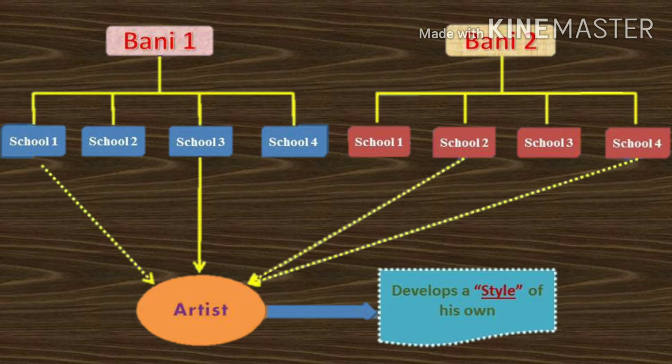We are now done with the two popular Banis and the major schools under them. How about styles? As we saw in the previous episode, leading masters under a particular school get influenced by other schools and develop their own playing methodology, which results in a new style. Sometimes the style created emerges as a tree — a Bani itself — because of its uniqueness and the gravity and significance of its branches and leaves.